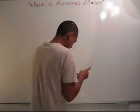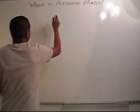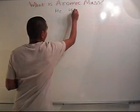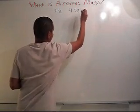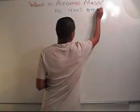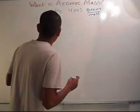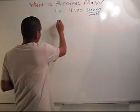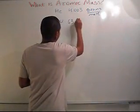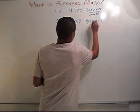The atomic mass of helium is equal to 4.003 grams per mole. The atomic mass of copper is equal to 63.55 grams per mole.